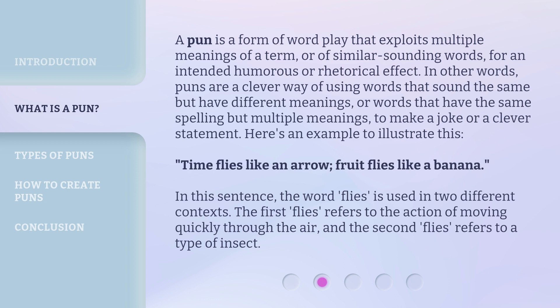Here's an example to illustrate this. In this sentence, the word 'flies' is used in two different contexts. The first 'flies' refers to the action of moving quickly through the air, and the second 'flies' refers to a type of insect.